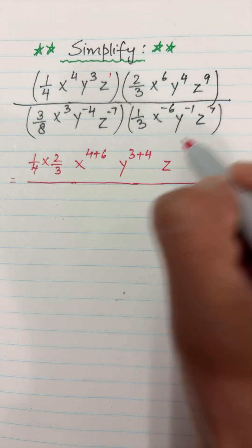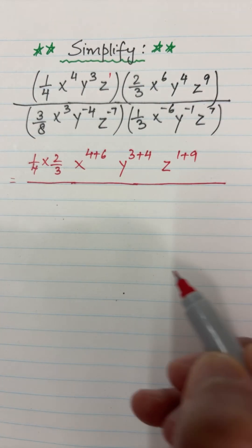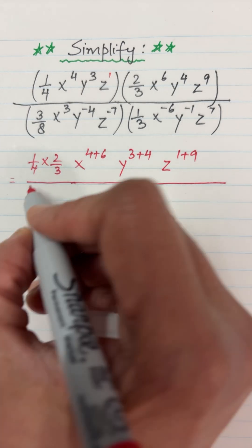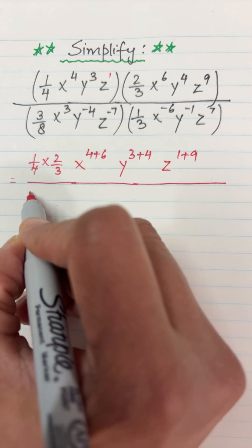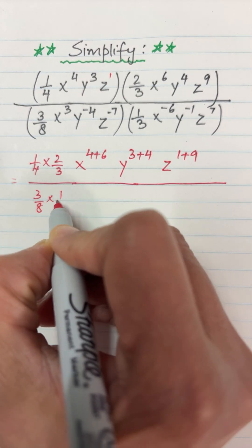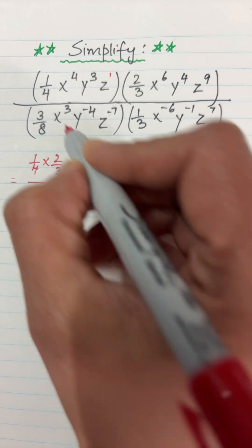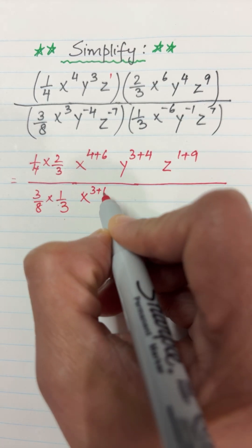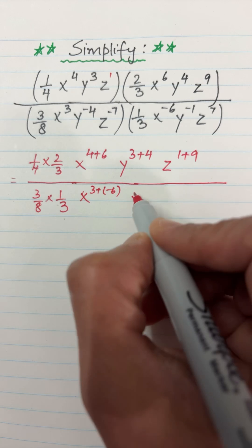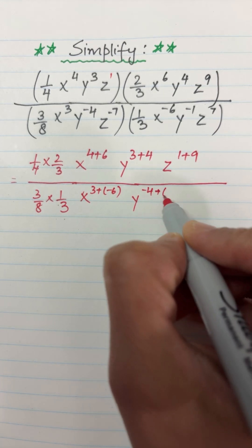For z, what is the exponent of z? It's 1, so 1 plus 9. So we have solved the numerator. Let's do the same with the denominator. Multiply 3/8 with 1/3, x^(3 + (-6)), y^((-4) + (-1)), and z^((-7) + 7).